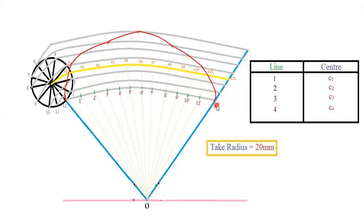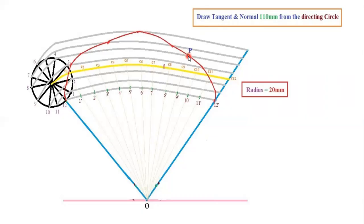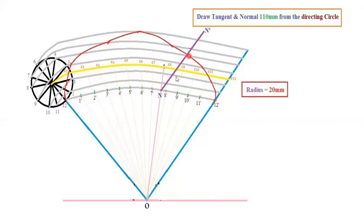To draw the tangent and normal at a point 110 mm from the directing circle: take your compass and measure 110 mm; place your compass at point O and cut an arc on the curve to get point P. Then take a 20 mm radius, keep the compass at P, and cut an arc on the locus of center. Join that intersection point to O — it will meet the lower arc of the directing circle. Mark that foot point as N.